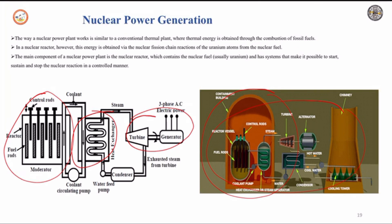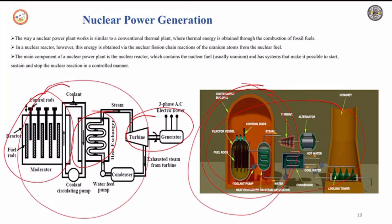These new neutrons further bombard the uranium-235, producing more heat and more neutrons. Thus, a chain reaction is set up. However, this reaction is allowed to take place in a controlled manner inside a closed chamber, which is called a nuclear reactor.